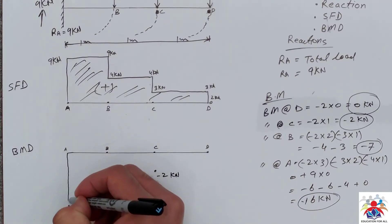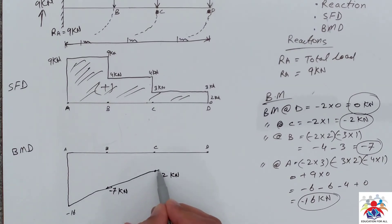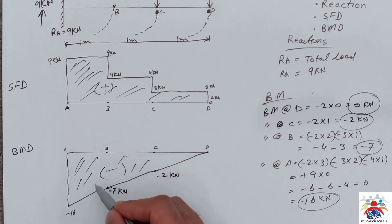Now we have to connect these points to get our final diagram. This is in the negative zone just because we have all the numbers in negative, so that's in negative.